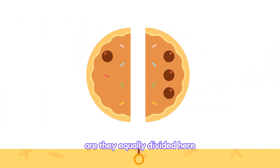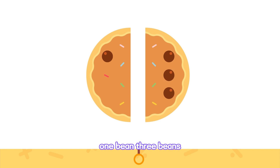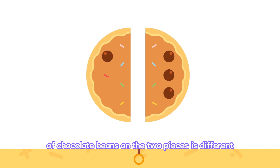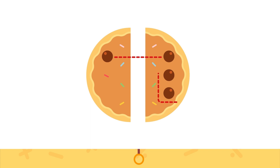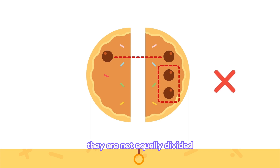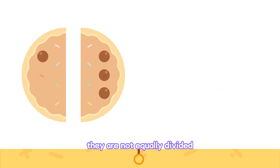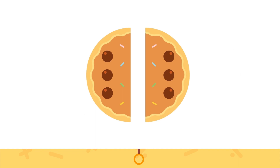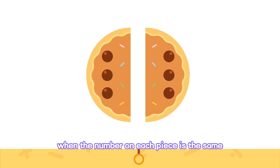Are they equally divided here? One bean, three beans. The number of chocolate beans on the two pieces is different — there are two extra ones here. They are not equally divided. Things are equally divided when the number on each piece is the same.